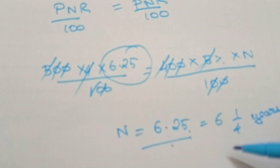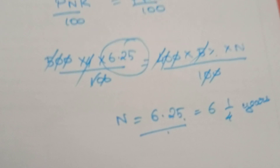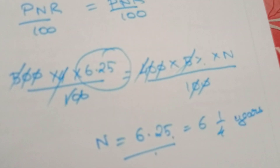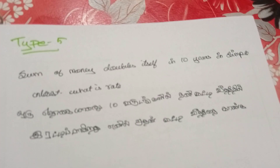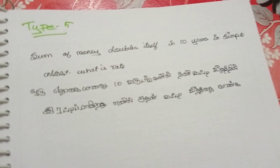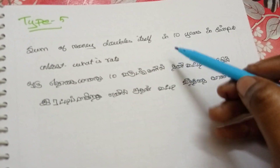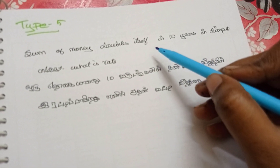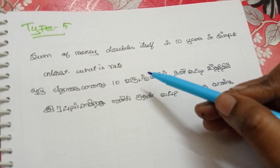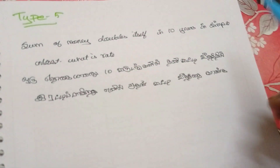Let's go to the percentage class. We will try this type of problem. Sum of money doubles itself in 10 years under simple interest. What is the rate?